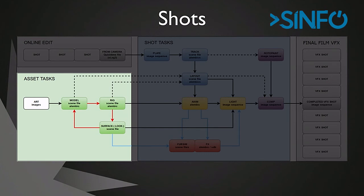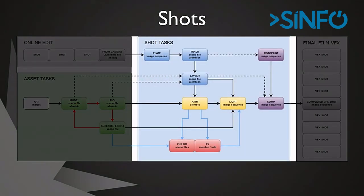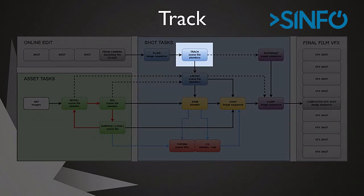So art feeds into the model, the model goes into the rig and into the surface, going around in a circle until they're ready to fire out into the rest of the pipeline. Now we're ready to look at shots — how we actually go into making a shot. The first thing is tracking.